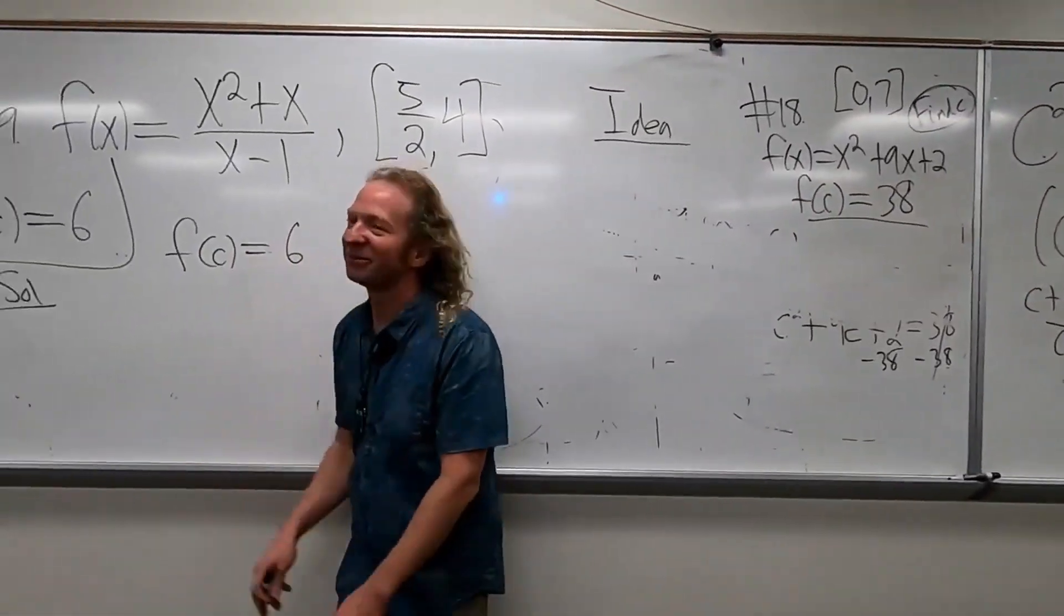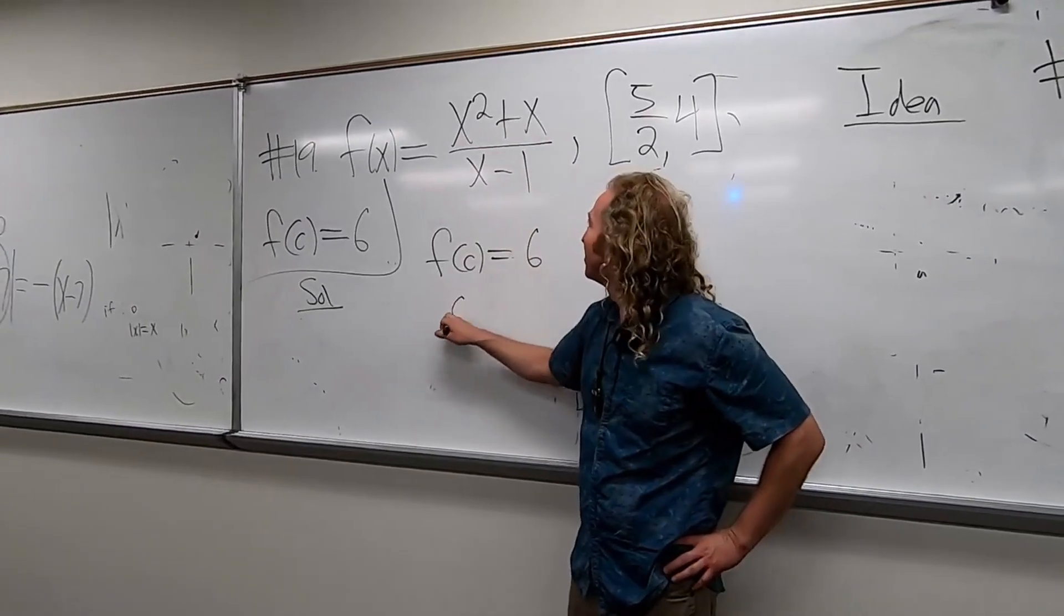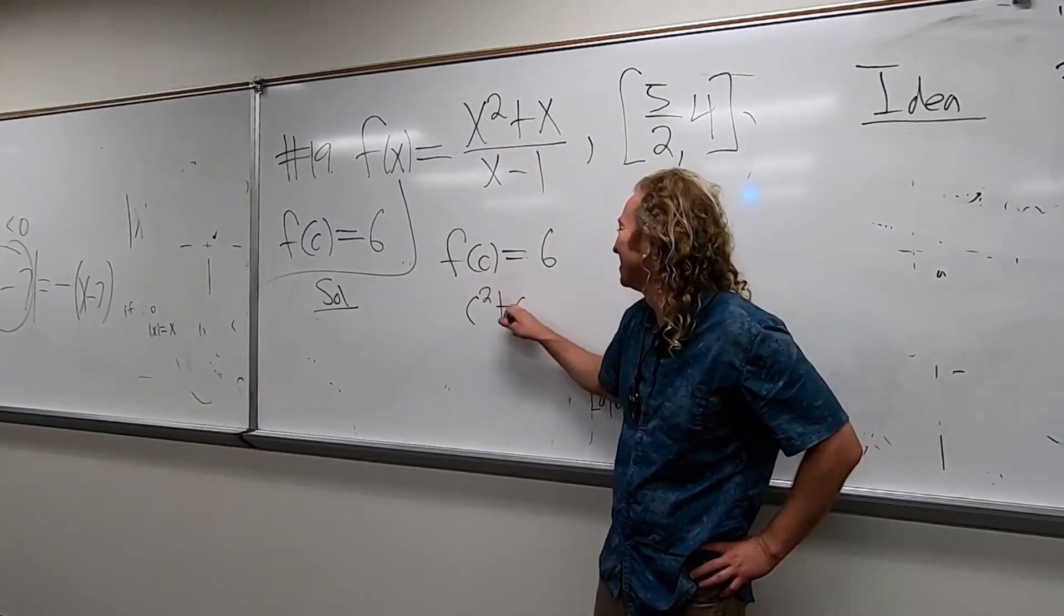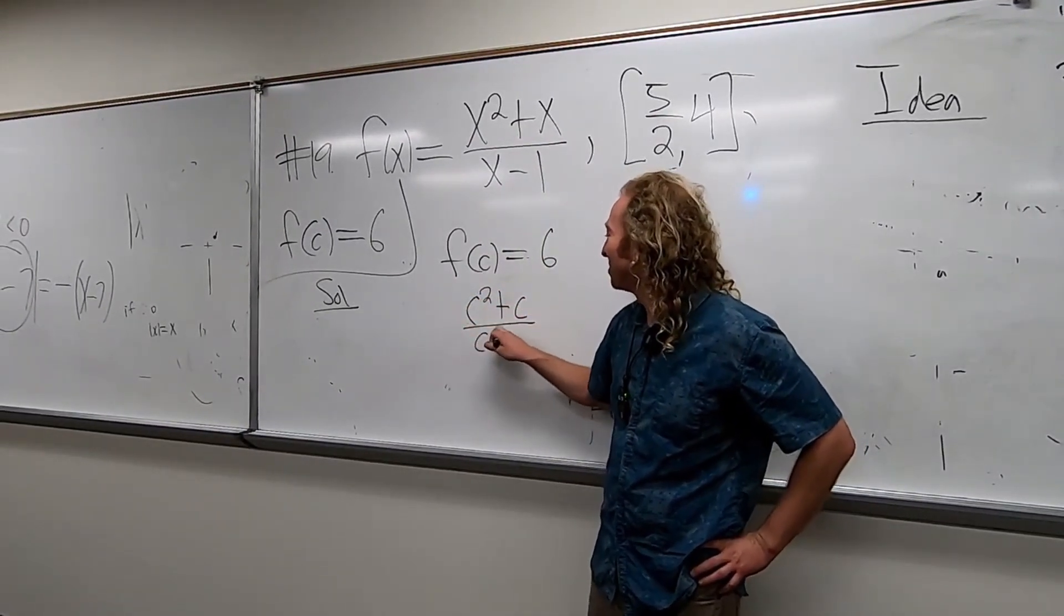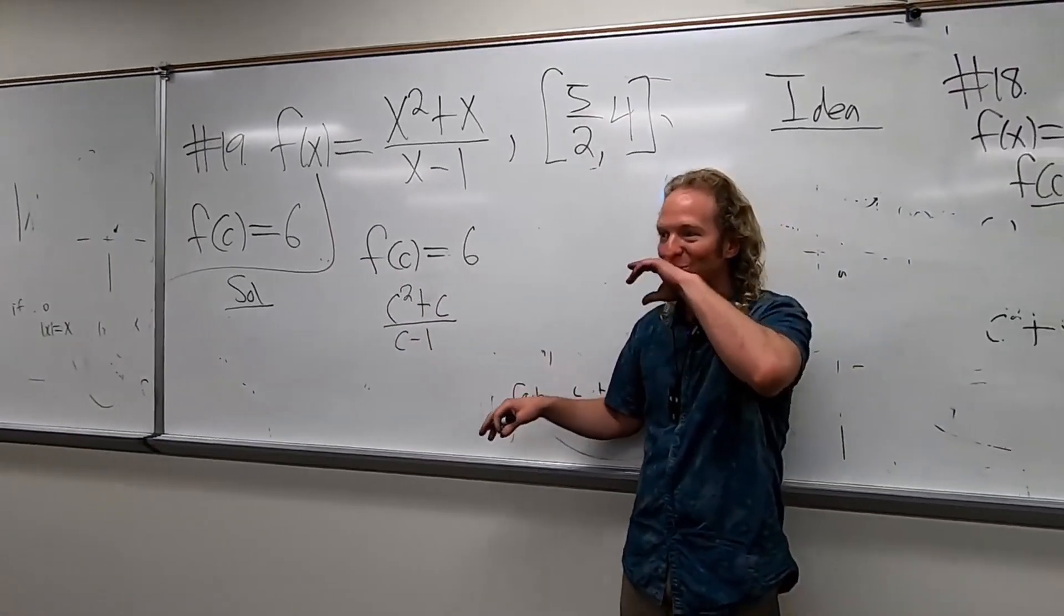So basically, we have F of C equals 6. We replace all the X's with C's. So this is C squared plus C over C minus 1, right, and then that whole thing equals 6.